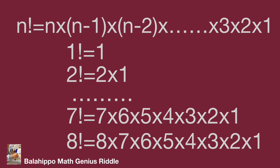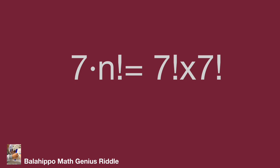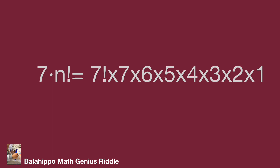Now, back to our given equation: 7 times n factorial equals the quantity 7 factorial squared. We know that 7 factorial equals 7 times 6 times 5 times 4 times 3 times 2 times 1. Substitute this value of 7 factorial into the right side of the equation.